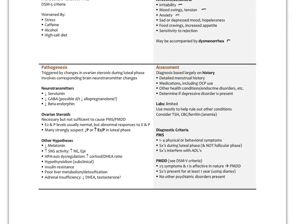What triggers PMS? We think it has to do with ovarian steroids during the luteal phase, but there's a lot happening with neurotransmitters as well. We see lower levels of serotonin, low GABA — possibly due to low allopregnanolone — and low beta-endorphin. Problems with estrogen and progesterone are necessary but not sufficient to cause PMS or PMDD. Usually estradiol and progesterone levels are normal, but we get abnormal responses to them. Many suspect a lower progesterone and/or a high estrogen-to-progesterone ratio in the luteal phase — more of an estrogen dominance picture.